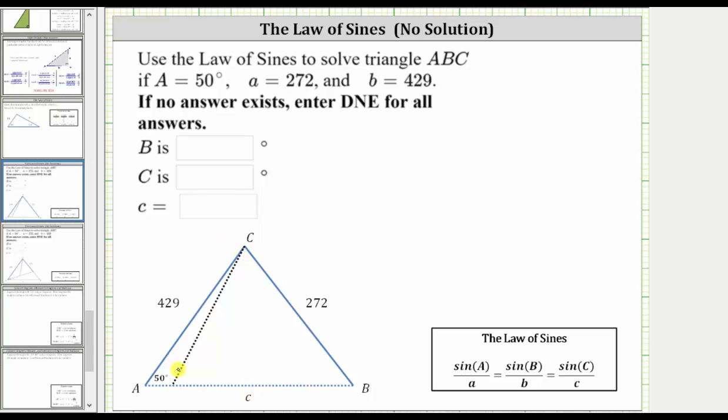Notice how I drew this dashed line here, because we don't know whether this side of 272 units swings to the right or swings to the left. Now let's set up an equation using the law of sines to determine the measure of angle B.